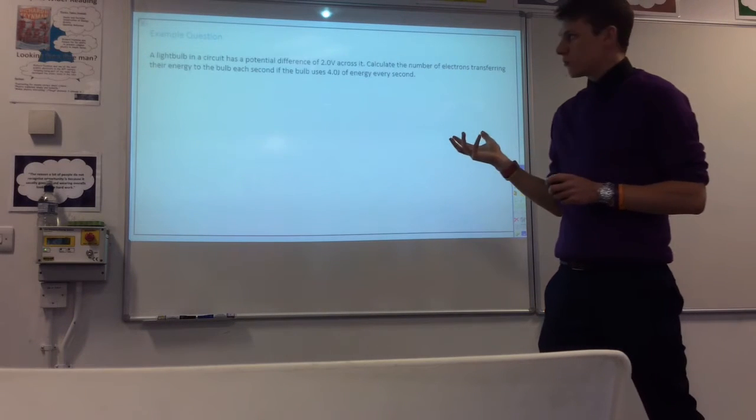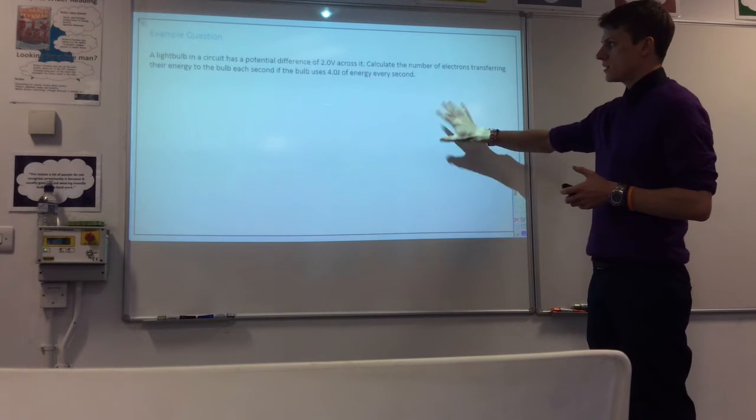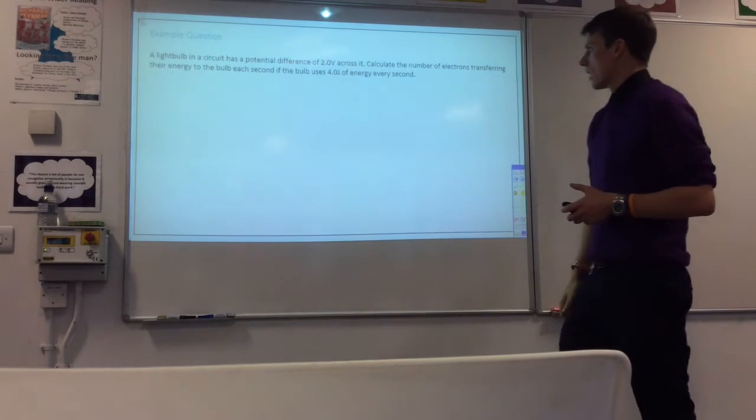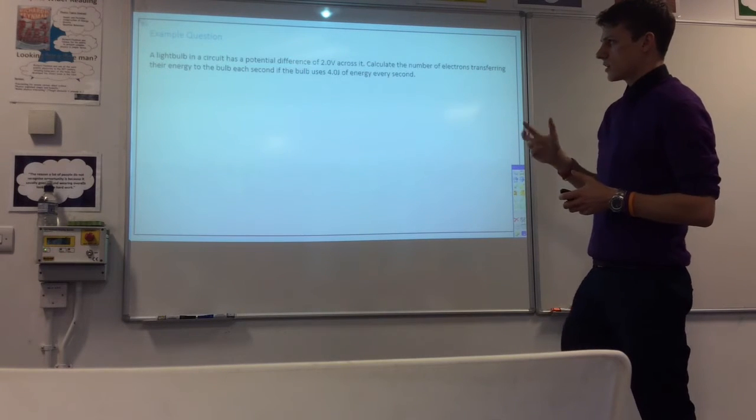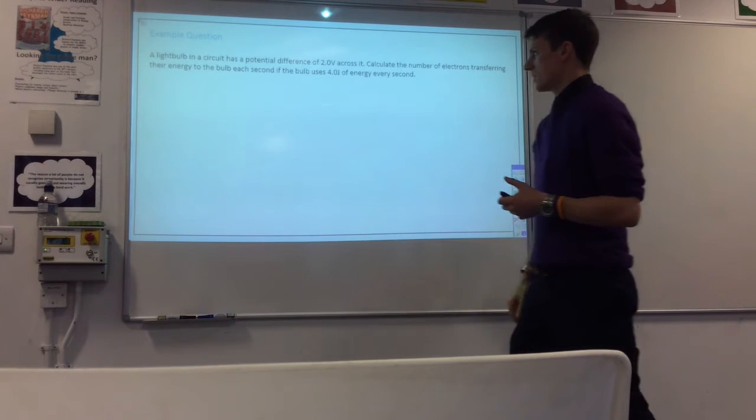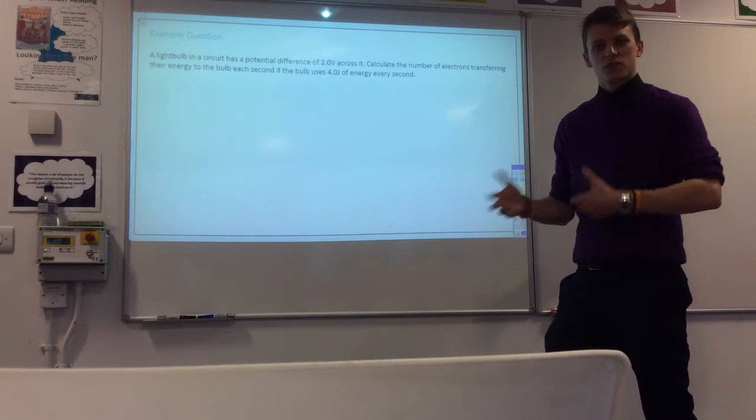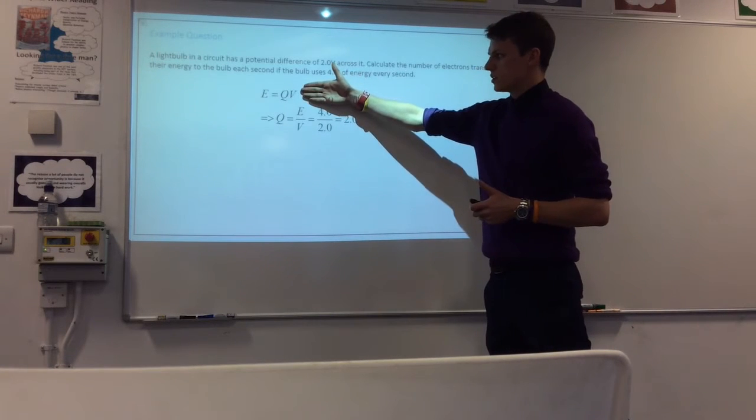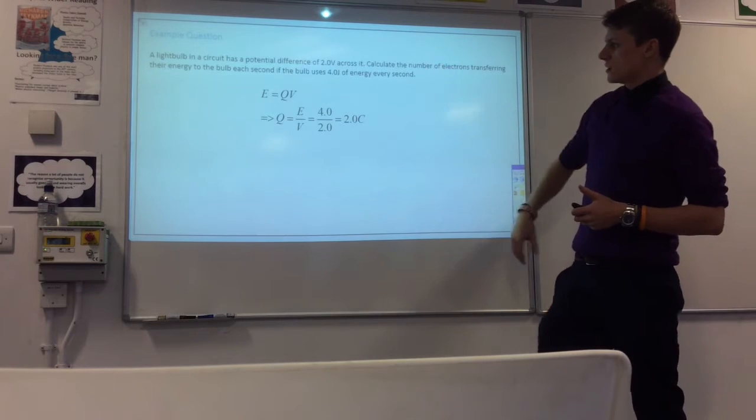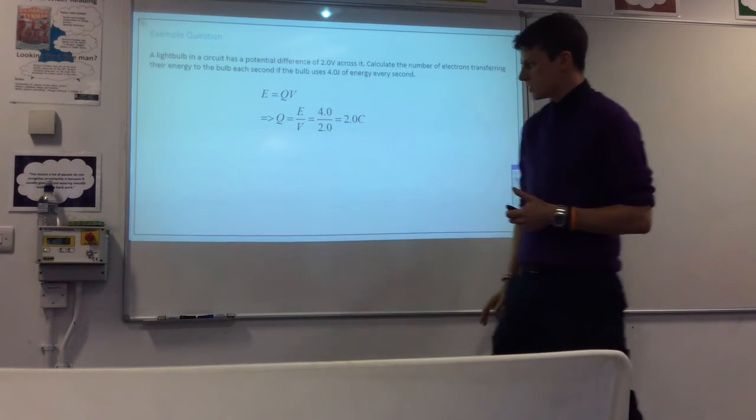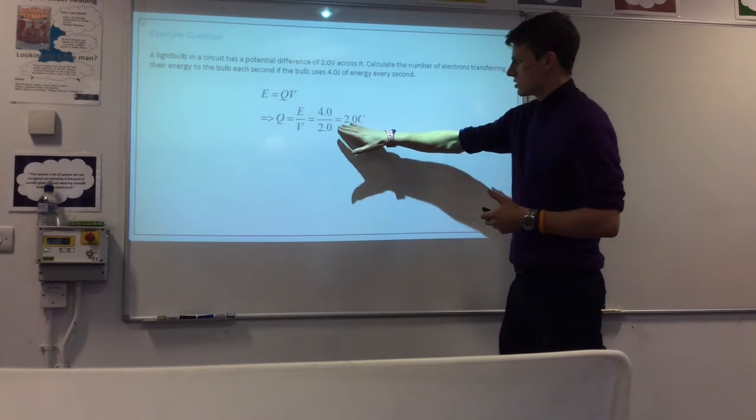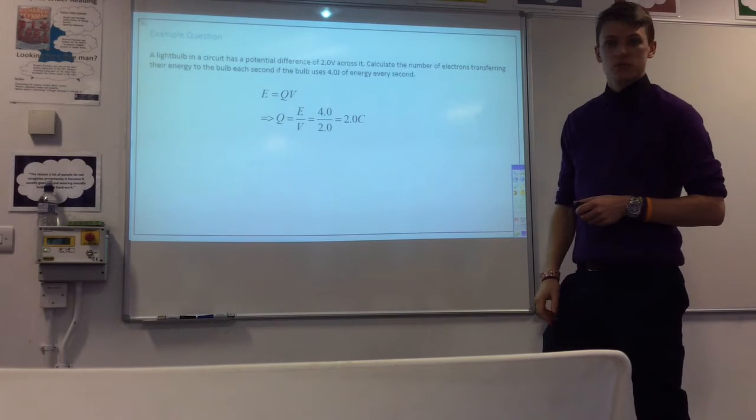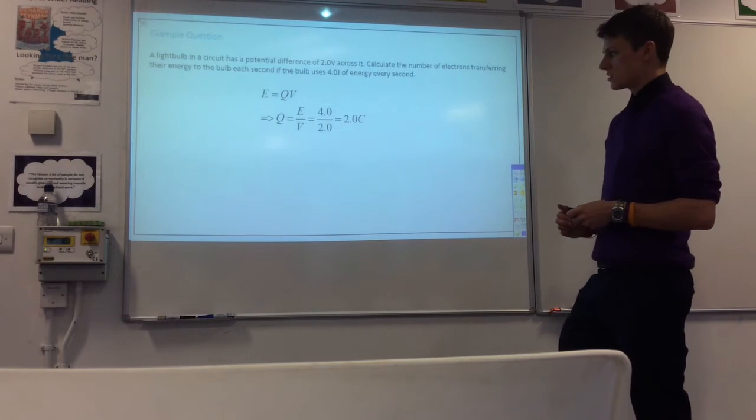So let's have a look at where we might use that. So we've got a light bulb in a circuit with a potential difference of two volts and we want to know how many electrons are transferring their energy if it uses four joules of energy every second. So we want to end up with electrons per second. So let's start off with our equation. So E equals QV. We want to calculate charge so we need to rearrange it to make Q the subject which is what we've got there. And we've calculated that the charge passing through the light bulb per second will be two coulombs. But it wants the number of electrons so let's do that.